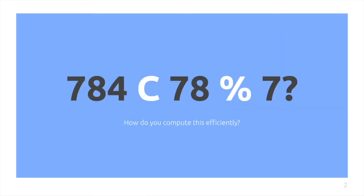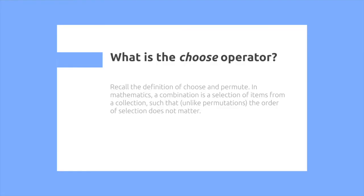Modular combinations. 784 choose 78 mod 7. How do you compute this efficiently? What is the choose operator? Recall the definition of choose and permutations.